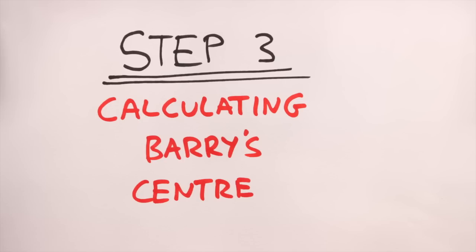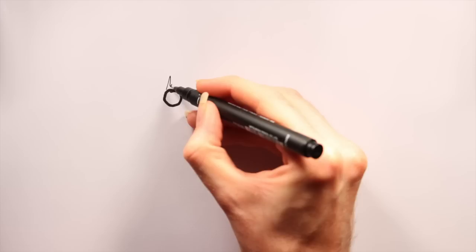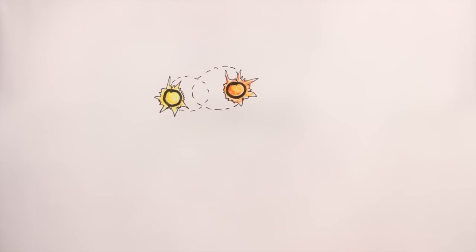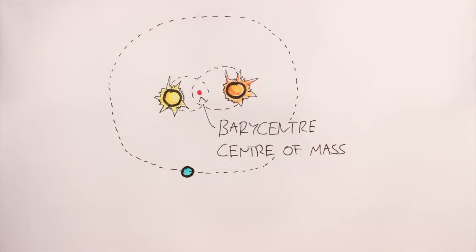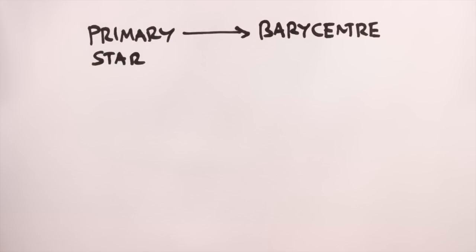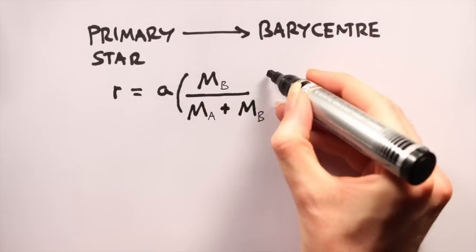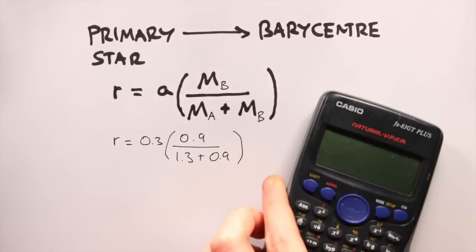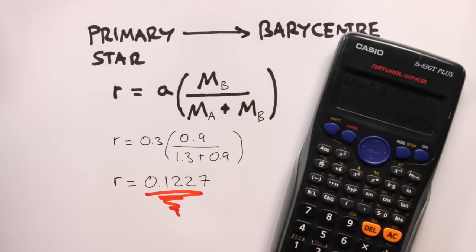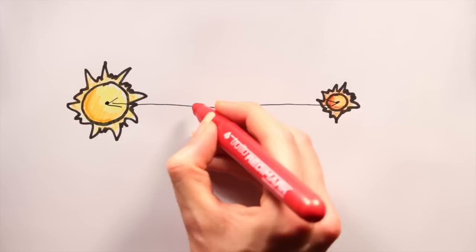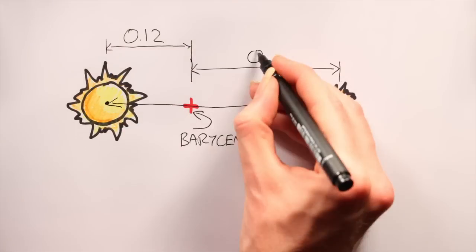Step 3, calculating barry's centre. Binary pairs tend to orbit each other about their common centre of mass, or barycentre. We need to know where this is, because any planets present will orbit this point in space, not the actual stars. The distance from your primary star to the barycentre is given by A, the average separation, multiplied by the mass of the secondary, divided by the sum of both masses. So, the barycentre of the Mikkel system is located 0.12 AU away from Mikkel A, and 0.18 AU away from Mikkel B.